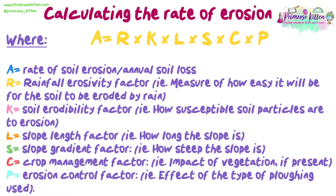The formula is: A = R × K × L × S × C × P. Where A equals the rate of soil erosion and annual soil loss. R is the rainfall erosivity factor — a measure of how easily the soil will be eroded by rain. K is the soil erodibility factor — how susceptible soil particles are to erosion. L is the slope length factor — how long the slope is. S is the slope gradient factor — how steep the slope is. C is the crop management factor — the impact of vegetation if present. And P is the erosion control factor — the effect of the type of ploughing used.